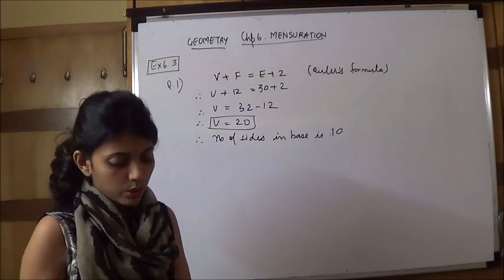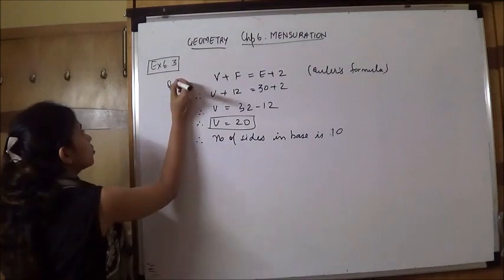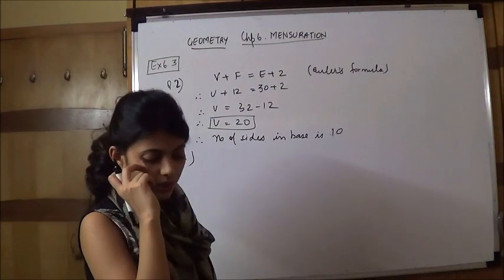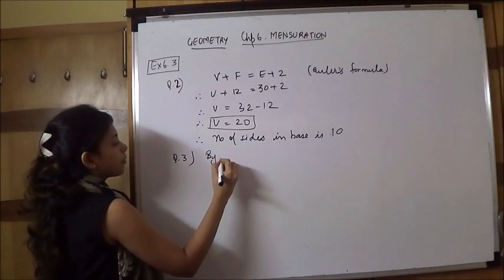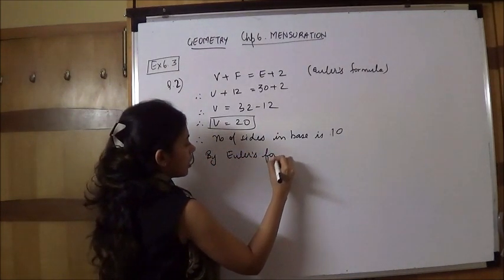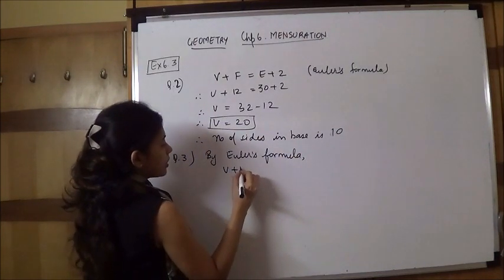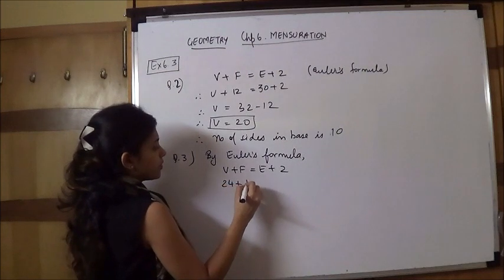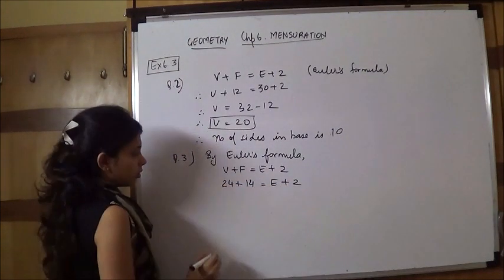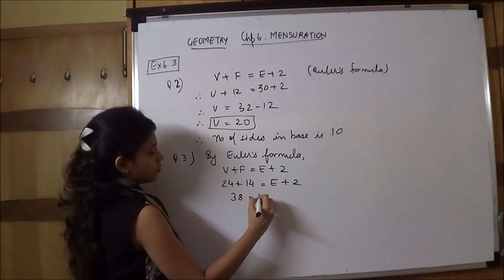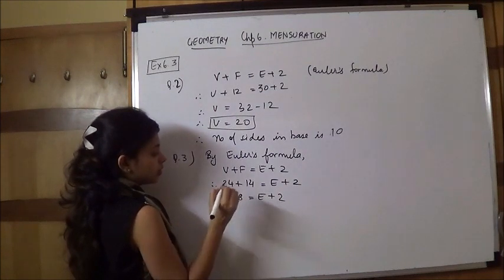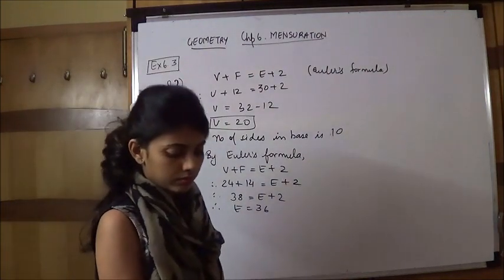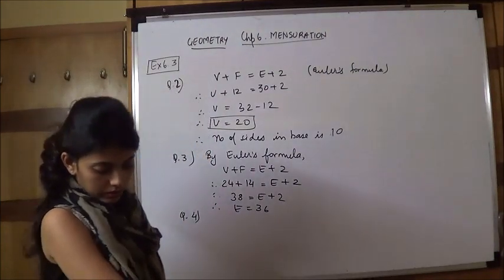Next, question 3. First, we will do question 4 and question 5. They are the same as question 2. We are given F is 14, V is 24. We are going to find out E. So again, we will start the sum directly by Euler's formula. V plus F equals E plus 2. What is your V? 24. F is 14. E plus 2. Therefore E equals 36.